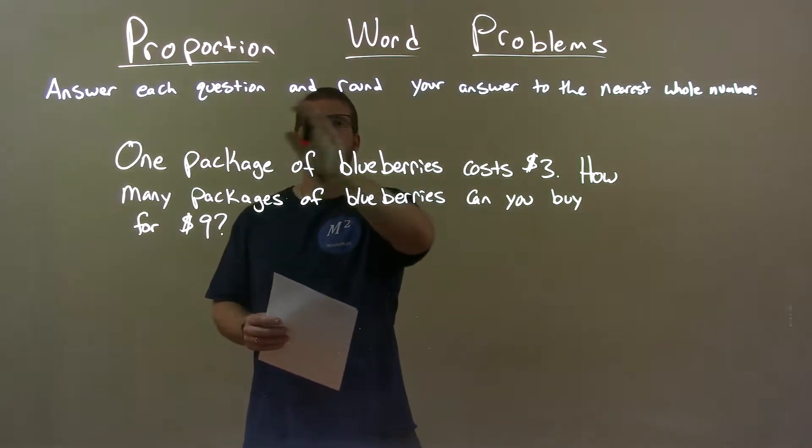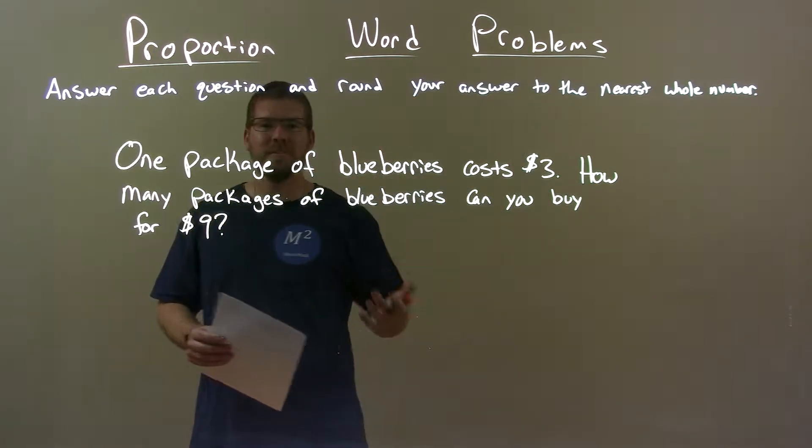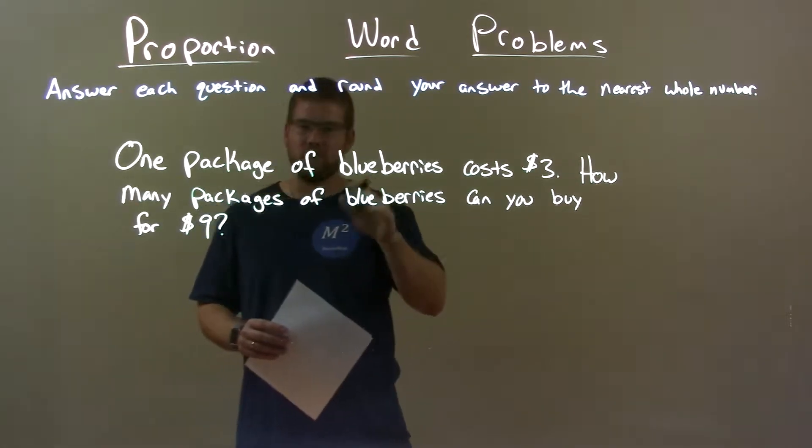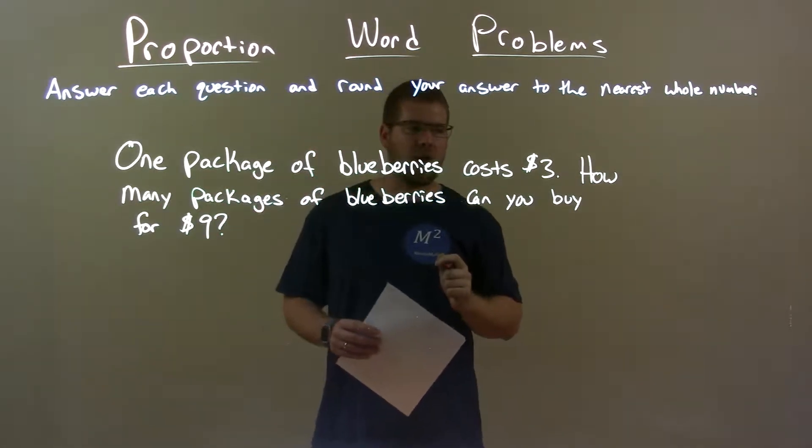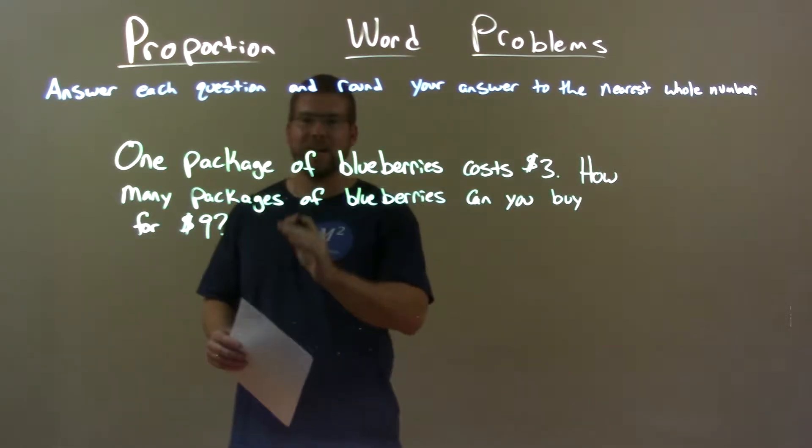We're going to answer each question and round your answer to the nearest whole number. I was given this problem: One package of blueberries costs $3. How many packages of blueberries can you buy for $9?